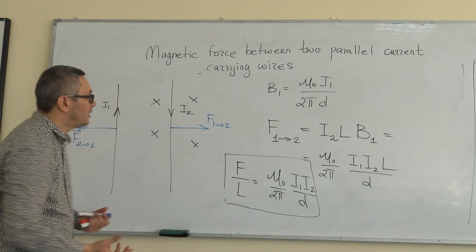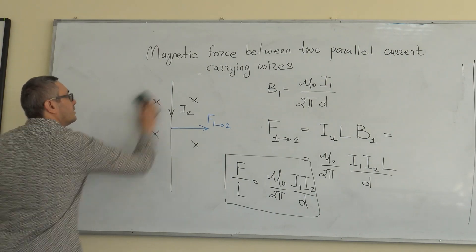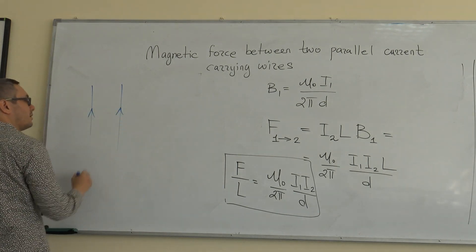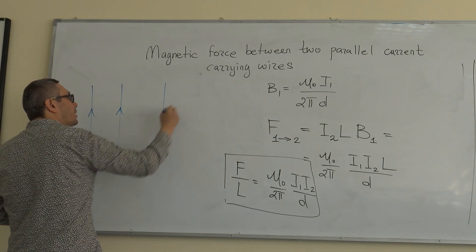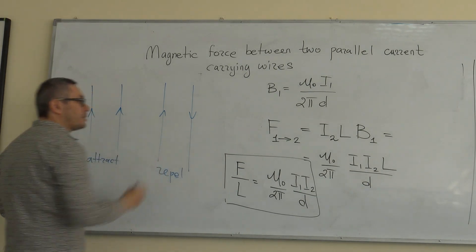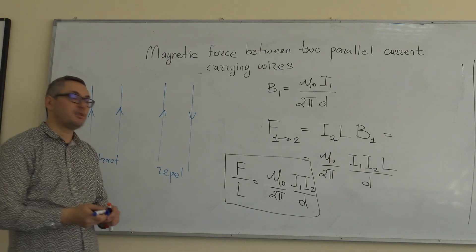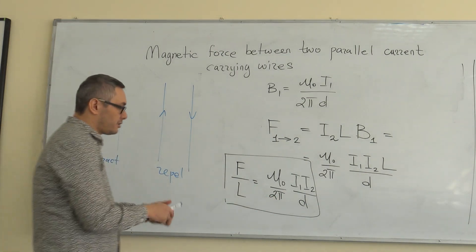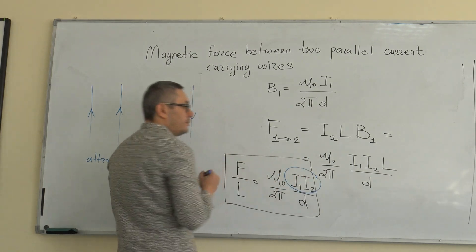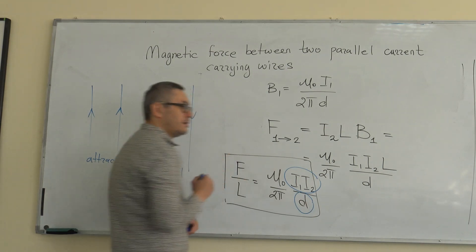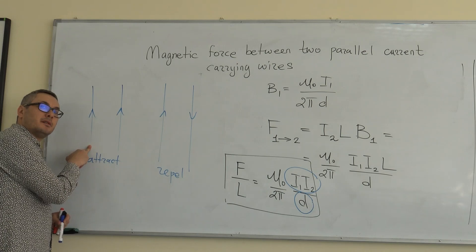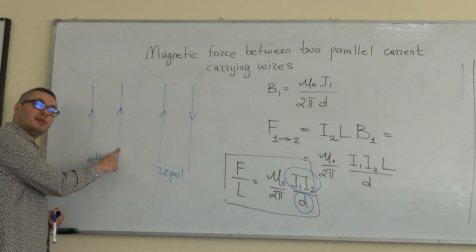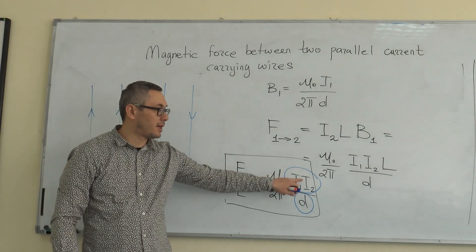To summarize: if two currents are flowing in the same direction, they attract each other. If the two currents are flowing in opposite directions, they repel each other. The force of attraction or repulsion per unit length is exactly the same in each case, as long as the distance is the same. The magnitude of that force depends on the product of the two currents and the distance. So if you change the magnitude of one current, the force acting on each wire increases proportionally, because the force depends on the product.